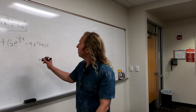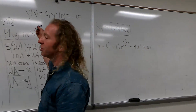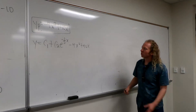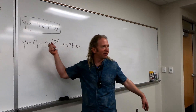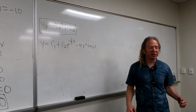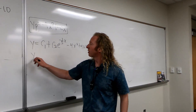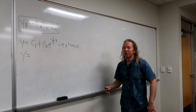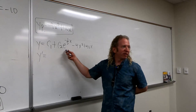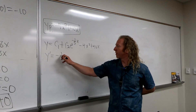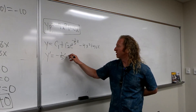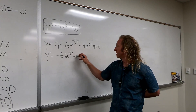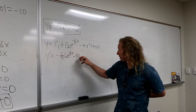The last thing we have to do is find the C's, using our initial conditions Y of 0 and Y prime of 0. Taking the derivative, the C1 term goes away, and the Yp prime gives us negative 1/5 C2 e to the negative 1/5 x, minus 8x, plus 40.